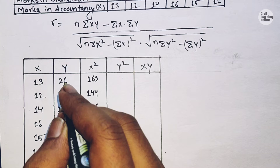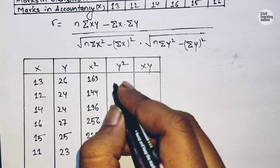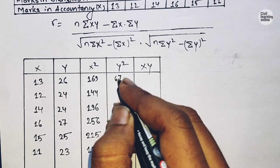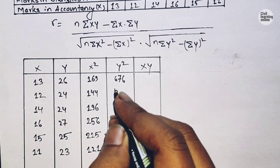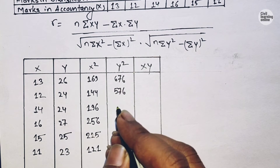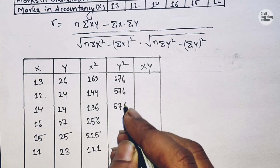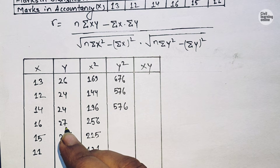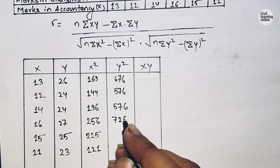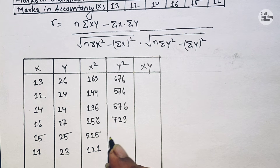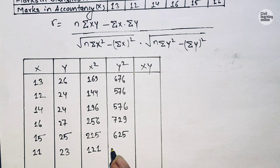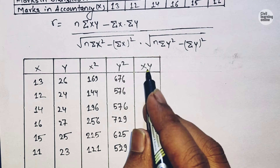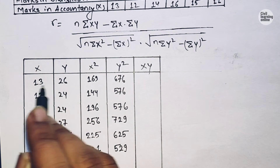Now for Y square, find the square of each Y value: 26 squared is 676, 24 squared is 576, another 24 squared is 576, 27 squared is 729, 29 squared is 841, 25 squared is 625, and 23 squared is 529.